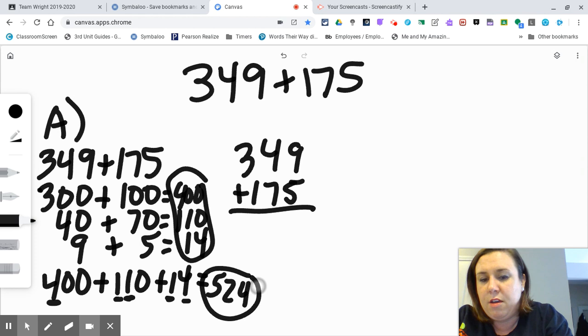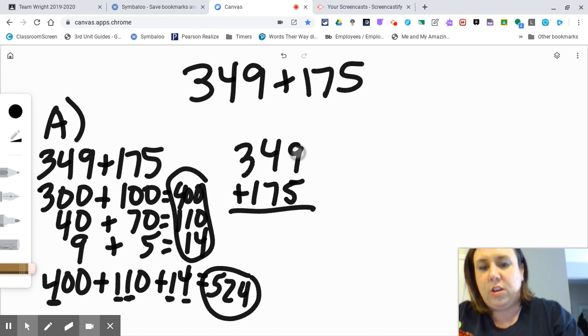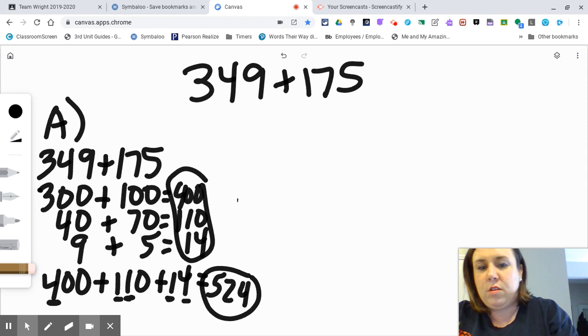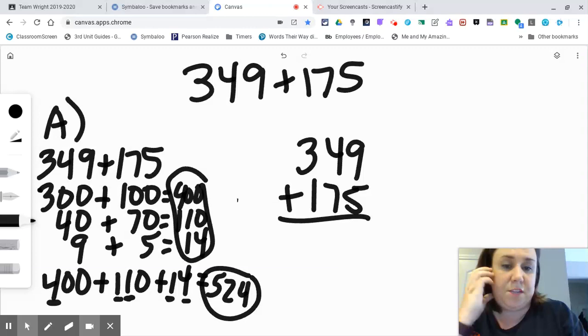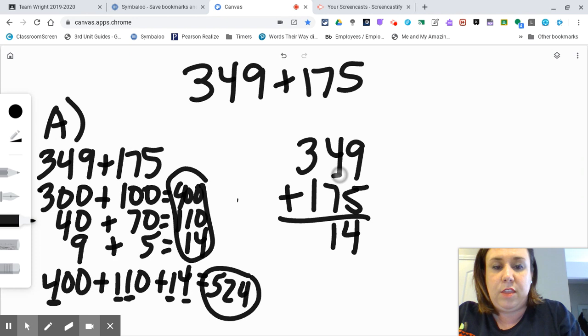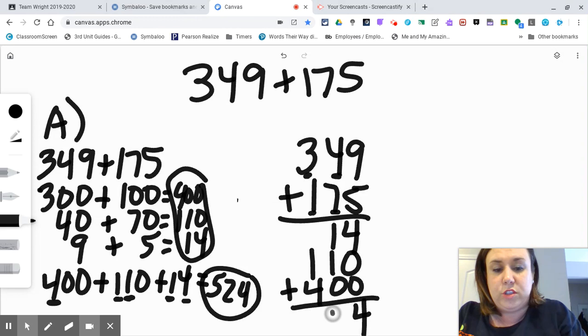What that looks like in vertical, breaking apart by place value... I'm just going to start with my ones, I can start with my hundreds, it doesn't matter. 9 plus 5, 9 plus 5 again was 14. This is 40, not just 4, 40 plus 70 is 110, 300 plus 100 is 400, and I'm adding together my place values. I have 4 total ones, I have 2 total tens, and 5 hundreds to be 524.